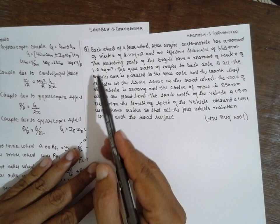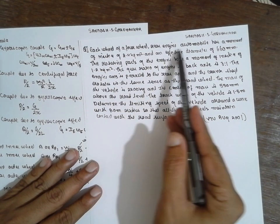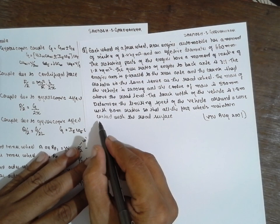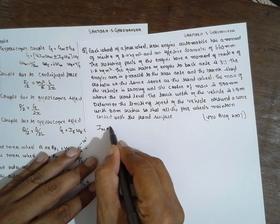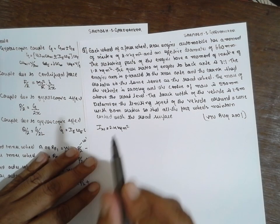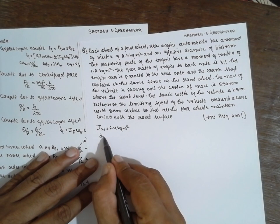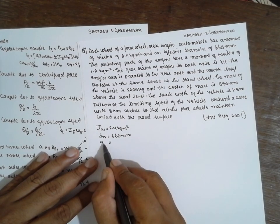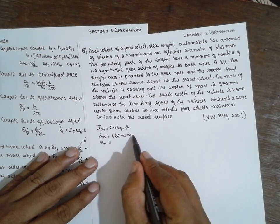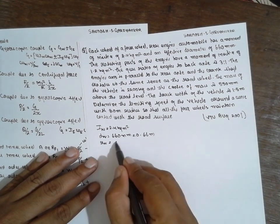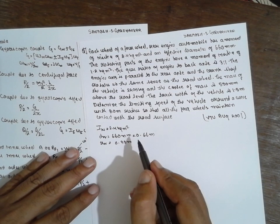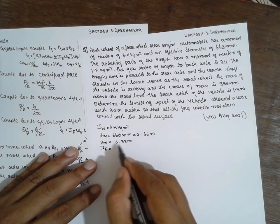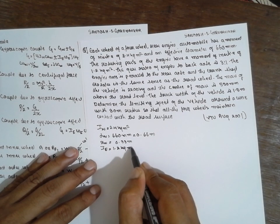This is the problem. Each wheel of the four-wheeler automobile has a mass moment of inertia IW equal to 2.4 kg·m², and the effective wheel diameter is 60 mm — you have to convert into meters, giving 0.66 m diameter and 0.33 m radius. The rotating part of the engine has a mass moment of inertia IE equal to 1.2 kg·m², and the gear ratio G is equal to 3.